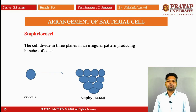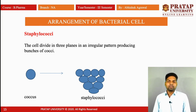Fourth is staphylococci. The cell divides in three planes in an irregular pattern, producing bunches of cocci like grapes. The coccus is divided into bunches of cocci; this is called staphylococci.